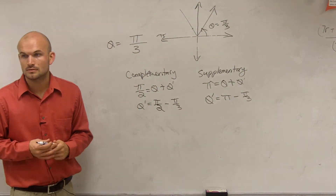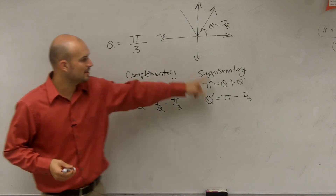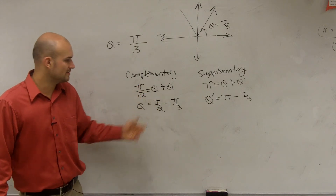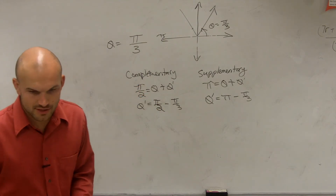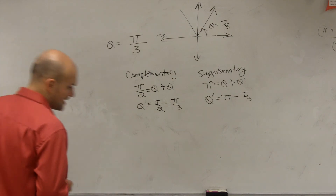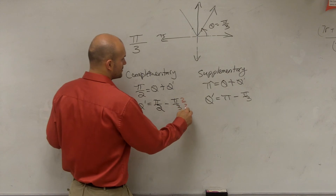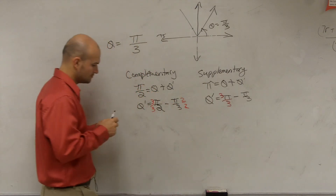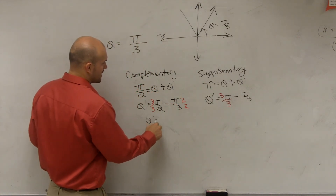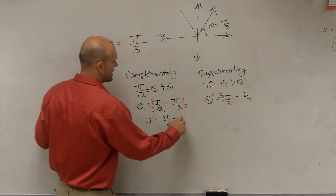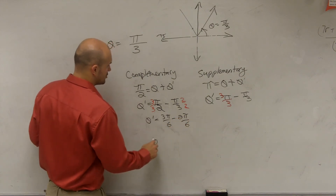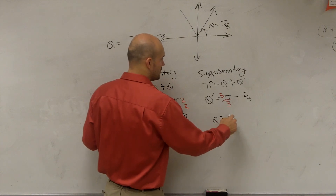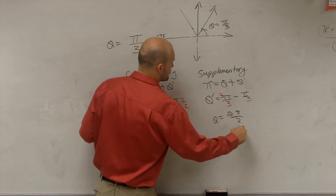Yes — for supplementary, it's going to be π, and for complementary, it's always going to be π over 2. Now notice these are not common denominators, so we've got to get common denominators. Here I've got to multiply by 2 over 2, and here I've got to multiply by 3 over 3. So therefore, theta prime equals 3π over 6 minus 2π over 6, so my complementary angle is going to be π over 6. And my supplementary angle is going to equal 2π over 3.